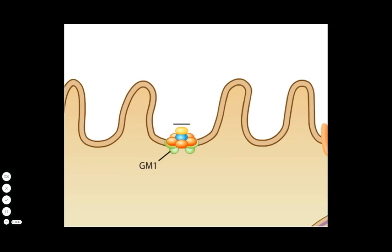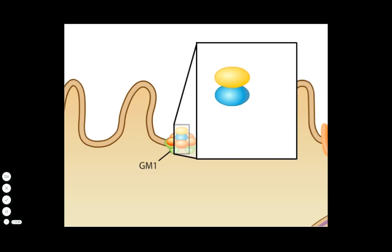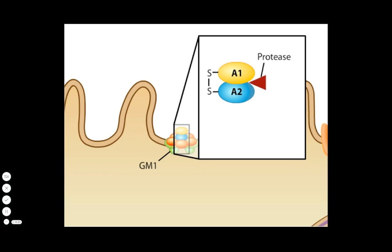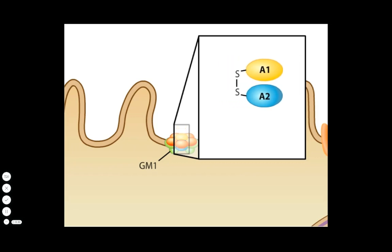The A subunit consists of two domains: the A1 domain, which contains the toxin's activity, and the A2 domain, which tethers the A subunit to the B ring. A protease clips the A subunit into two polypeptides, which remain together by virtue of a disulfide bond.